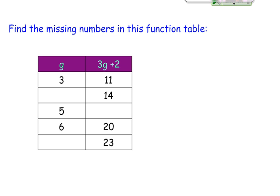Let's try another one. It says find the missing numbers in this function table. Now this table actually kind of gives us the pattern already. It says our input is g, but our output is going to be 3g plus 2. So 3 times g plus 2. It tells us what we need to do to solve, so we can go ahead and solve.